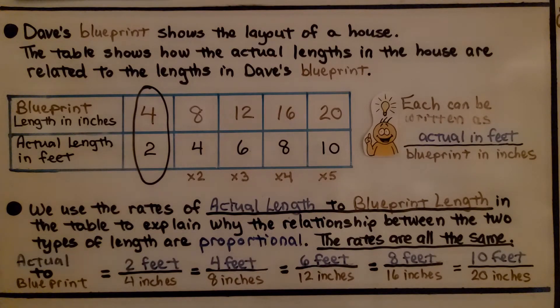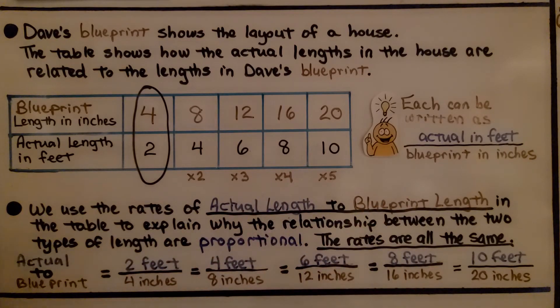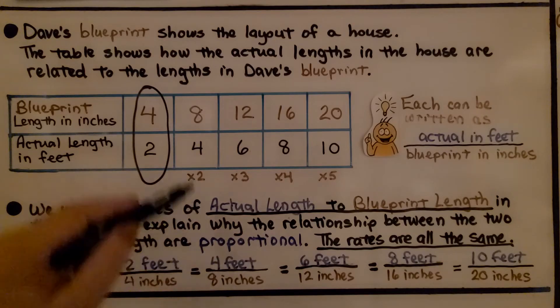We can flip these around. We use the rates of actual length to blueprint length in the table to explain why the relationship between the two types of length are proportional. The rates are all the same. So here the blueprint is on top and the actual length is on the bottom. It wants us to go actual length to blueprint length. That means actual is going to be on the top to blueprint length on the bottom. So we're going to do 2 feet to 4 inches. We flipped it around. See that? 4 feet to 8 inches.